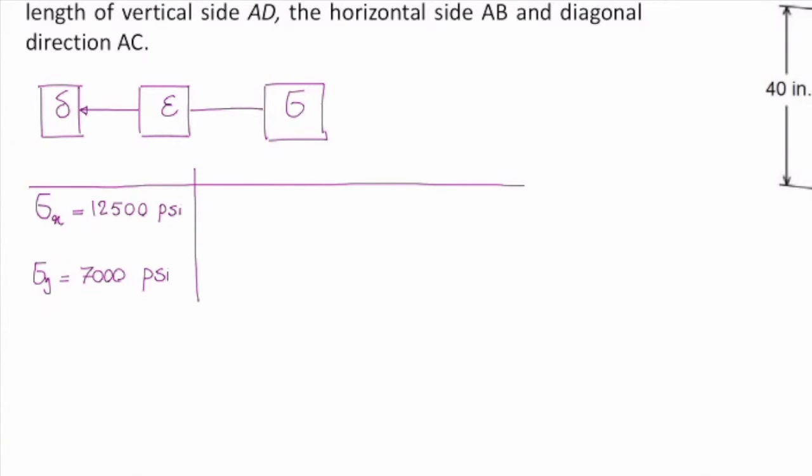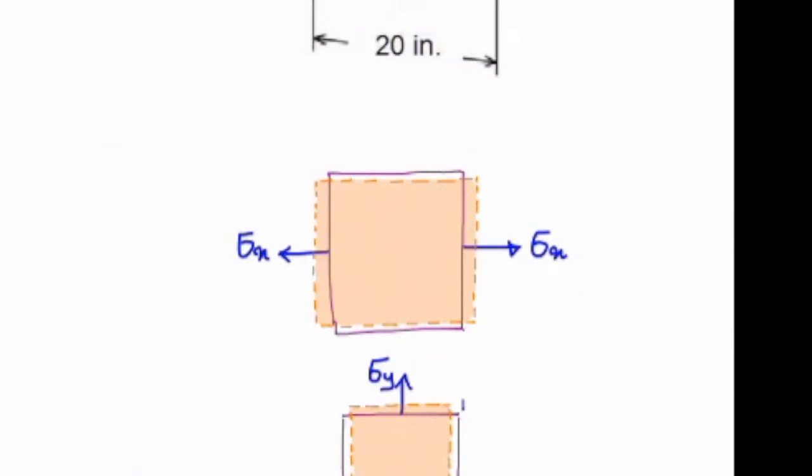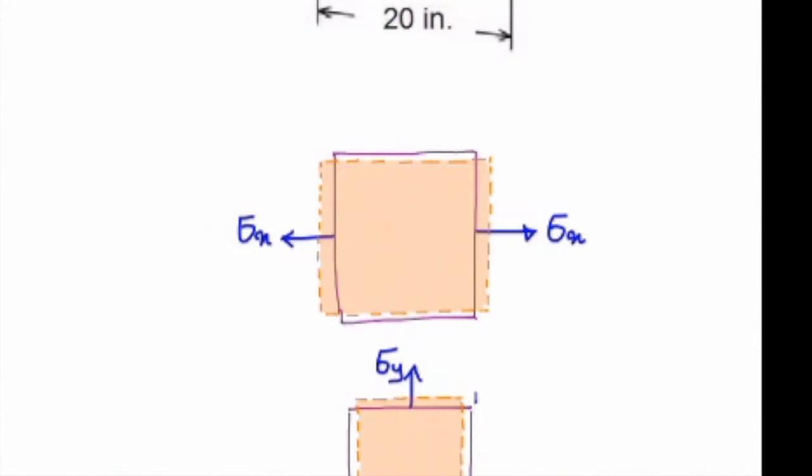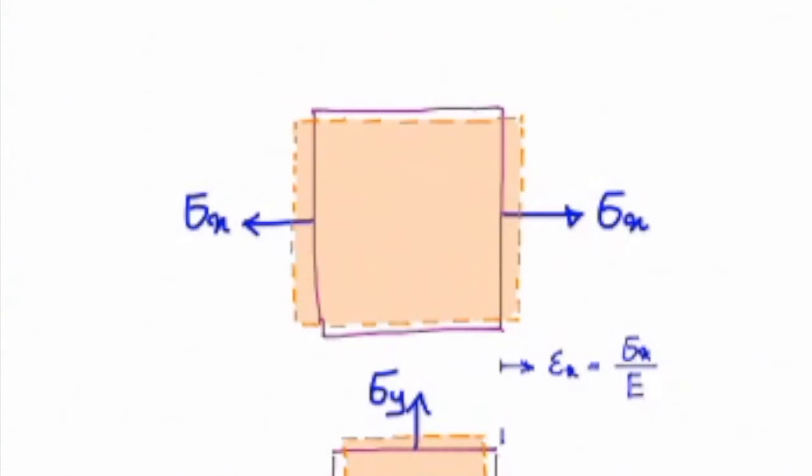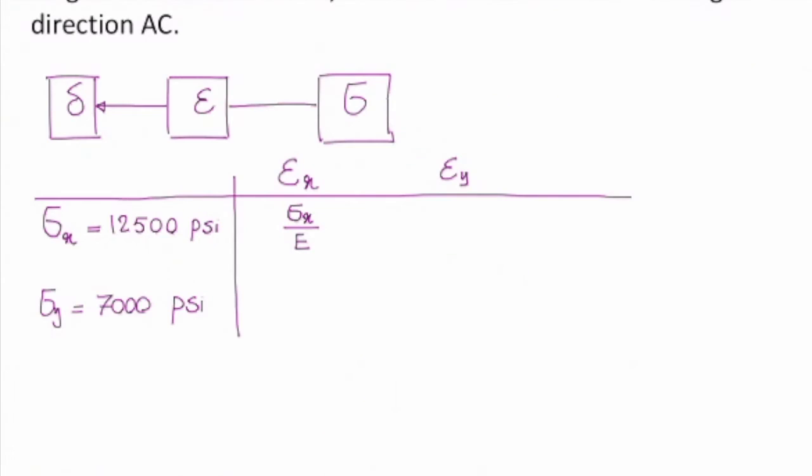First, I'm going to form a table and determine the effect of each deformation separately. I will first talk about Sigma X. Can you tell me how much is the strain in that direction, just because of Sigma X? It's Hooke's law. So it says that Sigma is equal to E Epsilon. Sigma X is equal to E times Epsilon X. So Epsilon X would be Sigma X over E. This is Hooke's law. So I'm writing that in the table over there.